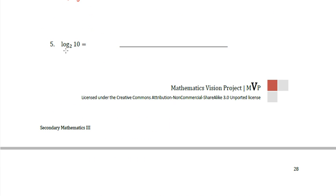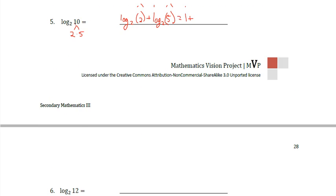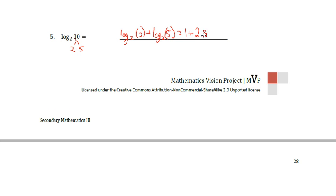10 breaks up into 2 times 5. So I'm going to say log base 2 of 2 plus log base 2 of 5 equals 1 plus 2.322. So we have 3.322.